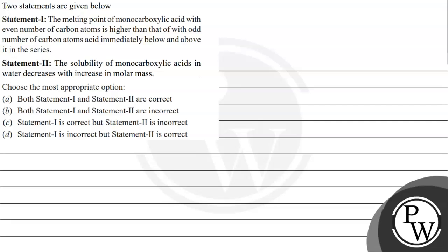Let's read this question. The question says two statements are given below. Statement 1: the melting point of monocarboxylic acid with even number of carbon atoms is higher than that of with odd number of carbon atoms immediately below and above it in the series.